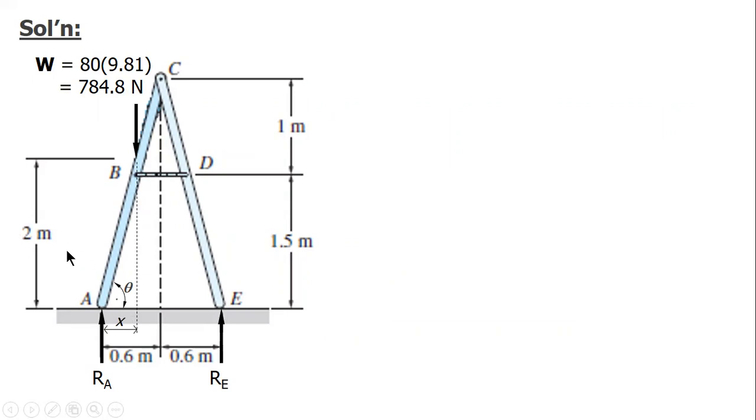To solve for theta, we will consider this triangle, and this distance is 2.5 and 0.6. So to solve for theta, you have tangent theta equals opposite 2.5 over adjacent 0.6, so theta is arc tan of 2.5 over 0.6, that is equal to 76.504 degrees.